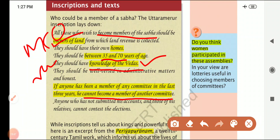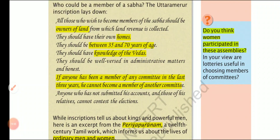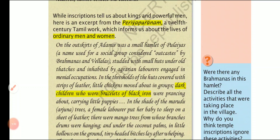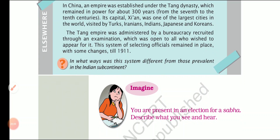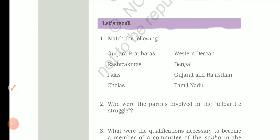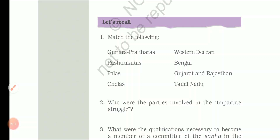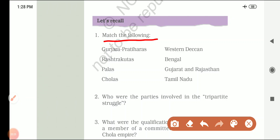A possible MCQ: what are the qualifications required to be a member of Sabha in the medieval Chola empire? The work called Periapuranam discusses the lives of ordinary men and women — remember this name. So this concludes our discussion. You can do the exercises yourself. Key match-the-following answers: Gurjara-Pratiharas in Gujarat and Rajasthan, Rashtrakutas in Western Deccan, Palas in Bengal, and Cholas in Tamil Nadu.